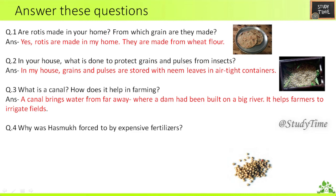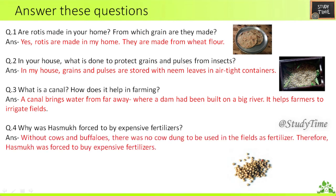Fourth question — why was Hasmuk forced to buy expensive fertilizers? Without cows and buffalos, there was no cow dung to be used in fields as fertilizer; therefore he was forced to buy expensive fertilizers.